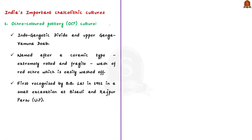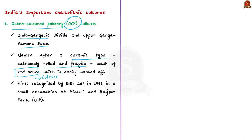First is the Ochre-Coloured Pottery (OCP) culture, present in the Indo-Gangetic divide and upper Ganga-Yamuna Doab. It is named after a ceramic type that is extremely fragile with a wash of red ochre that is easily washed off. It was first recognized by B.B. Lal in 1951 at Bisauli and Rajpur-Parsu — two sites in Uttar Pradesh where copper hoards were found.